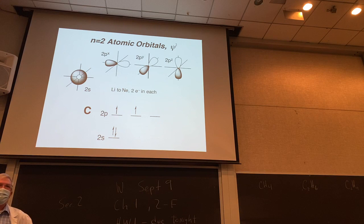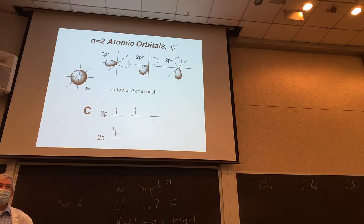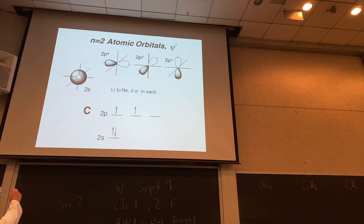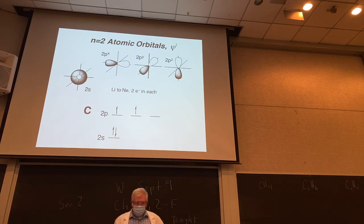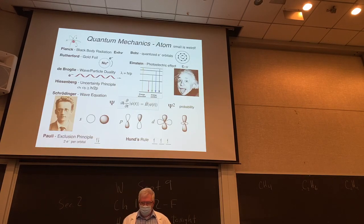Double bonds and double bonds to heteroatoms — oxygen, nitrogen — and then triple bonds and those geometries. We get that from VSEPR theory, but here we don't have very much, so we need to go forward into another level of theory.